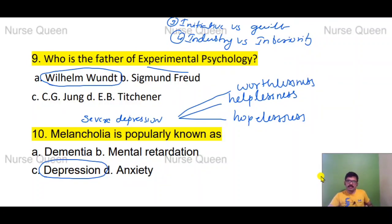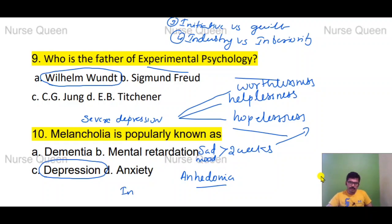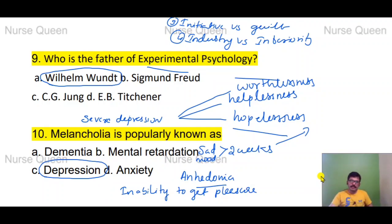The three hallmarks of depression are helplessness, hopelessness, and worthlessness. A persistent sad mood lasting more than 2 weeks indicates depression — the patient should see a psychiatrist. Another key feature is anhedonia — inability to get pleasure from previously pleasurable activities.